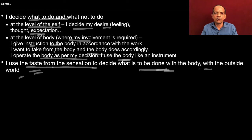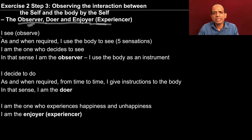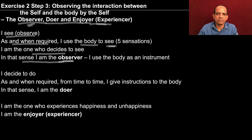Having discussed this, we will talk about the observer, the doer, and the enjoyer — the observer is also called the seer, and the enjoyer can also be called the experiencer. Having seen that I am the one who decides, I observe as and when required — I use the body and its five sense organs to receive sensation. So I am the one who decides to see; in that sense I am the observer, not the body. The eyes are not observing — they are part of the body, and I am utilizing the eyes as my instrument.